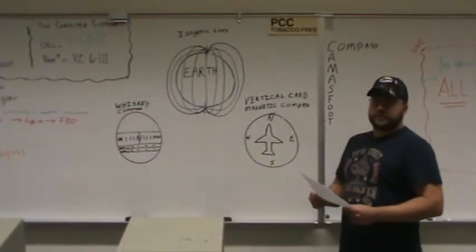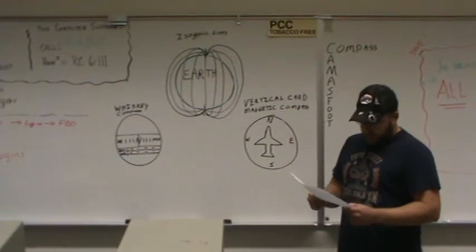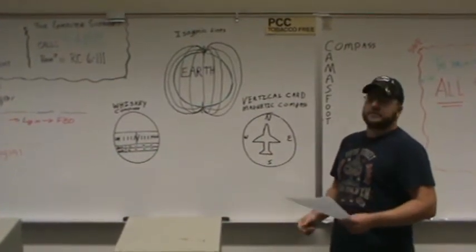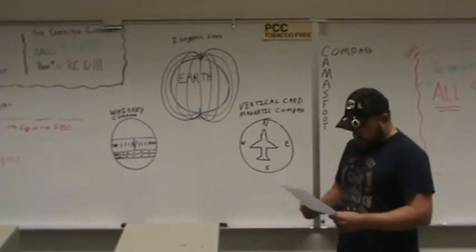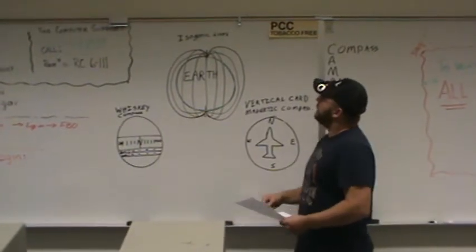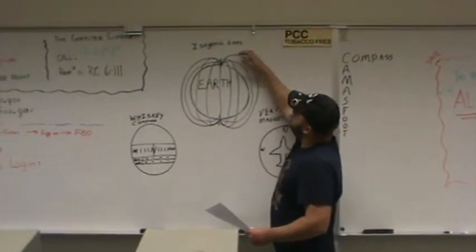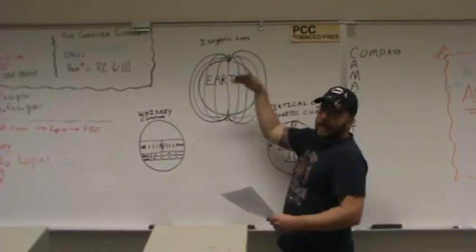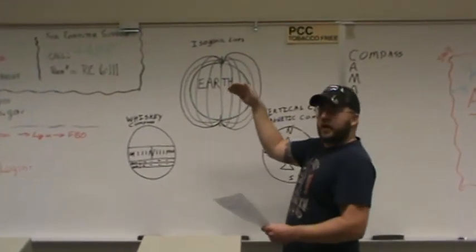Magnetic dip is another error that we deal with. And that occurs in the northern and southern hemisphere. And what happens is these isogonic lines are pulling down the magnet on your compass.